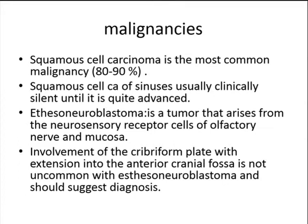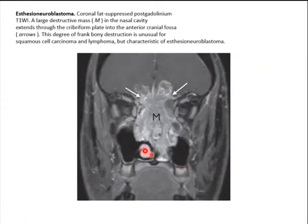Malignancies of the paranasal sinuses include squamous cell carcinoma, which is the most common at about 90%, and is typically clinically silent until quite advanced. Another malignant pathology is esthesioneuroblastoma, a tumor arising from the neurosensory receptor cells of the olfactory nerve. Since it arises from the olfactory mucosa, it most commonly involves the cribriform plate extending into the anterior cranial fossa. Involvement of the nasal cavity and anterior cranial fossa should suggest the diagnosis. In this case, there is a mass lesion extending through the cribriform plate, which is almost destroyed, extending into the anterior cranial fossa with heterogeneous enhancement, suggesting esthesioneuroblastoma.